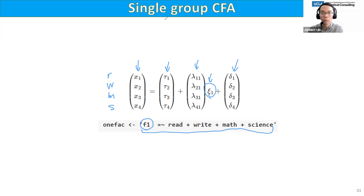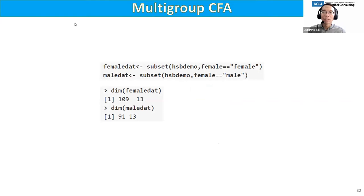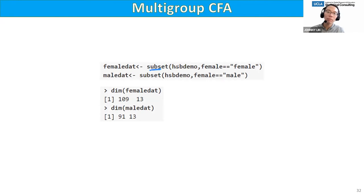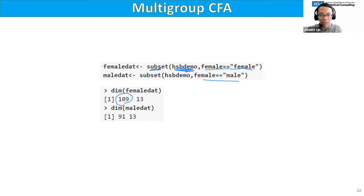For multi-group CFA, you split the data set into groups — in this case males and females. You can use R's subset command: subset the HSB demo data for females (109 rows) and males (91 rows), each with 13 columns. Then you re-run the CFA for each group separately. By default, CFA constrains the observed intercepts to zero, but setting mean structure to true lets us estimate them — important because we'll want to constrain them in subsequent models.